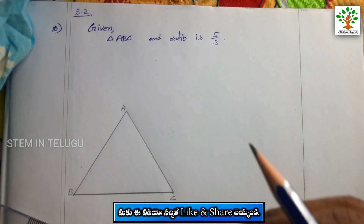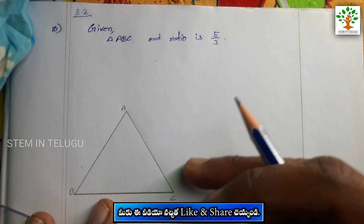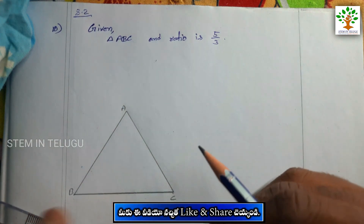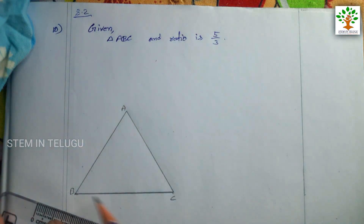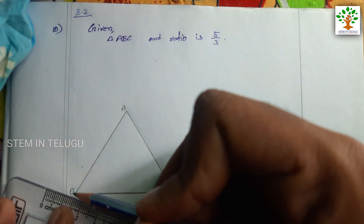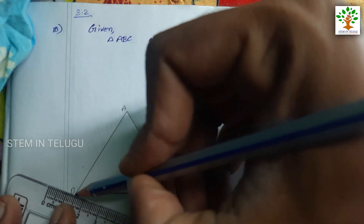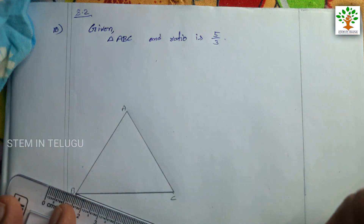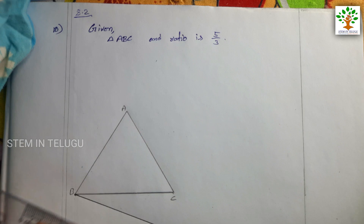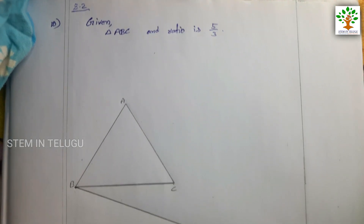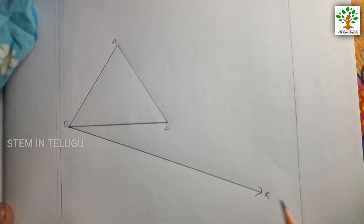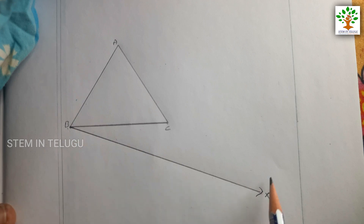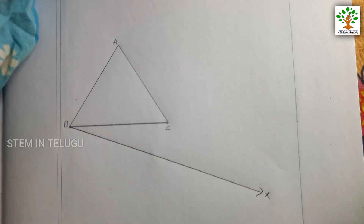Next, if you want to draw the triangle, I will draw it. First, I will draw the triangle with points B and C, then label the vertices A, B, and C. Okay?